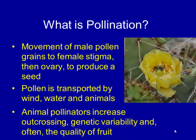Pollen that's transported by wind is usually things like grasses and some trees that have inconspicuous flowers, like oak and maple trees. It's very light, and they produce lots of it, because it's just getting thrown out to the wind and hopefully going to hit another tree of the same species or grass of the same species. That's typically what triggers allergic reactions. Things that are pollinated by animals tend to produce bigger, stickier pollen, and less of it.